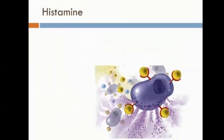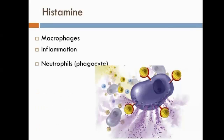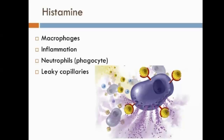Macrophages also produce a cytokine called histamine. Histamine is also released from mast cells and basophils, causing the inflammatory response — why you feel itchy and get a runny nose with hay fever. Histamine attracts neutrophils by chemotaxis and causes capillaries to become leaky, filling the infection site with tissue fluid, causing swelling at an infected cut, and moving the pathogen slightly closer to the lymph nodes where the macrophages are found.